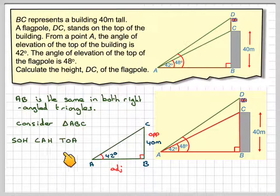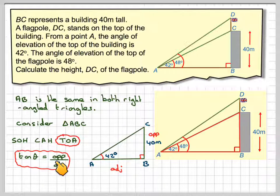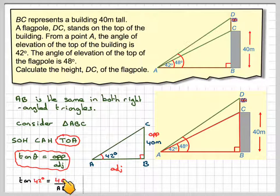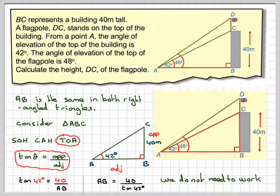Using SOH CAH TOA, we've got opposite and adjacent, so we're going to use tan. Write out the identity: tan theta is opposite over adjacent. So tan 42 is 40 over AB. Therefore, AB will be 40 over tan 42. We don't need to work this out at this stage, but if you do, don't round it off because you're going to need this in the next stage.